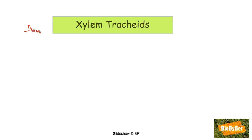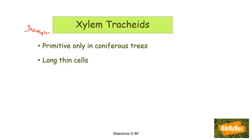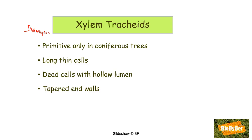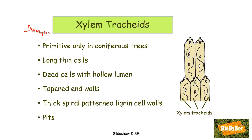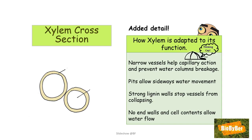To describe xylem tracheids: they are primitive and only found in coniferous trees like pine or Christmas trees. Xylem tracheid tissue is made up of long, thin dead cells with a hollow lumen and tapered end walls. They have thick, spiral-patterned lignin cell walls and pits to allow sideways movement of water. Looking at a xylem cross-section, we can see the thickened lignin cell wall and the empty lumen inside — the pipes are of narrow bore but hollow to allow passage of water.